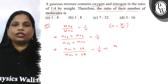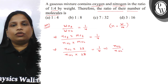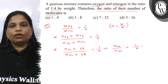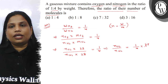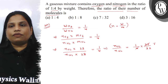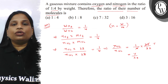Now the ratio of number of moles of oxygen to number of moles of nitrogen will be 1 by 4 multiplied by 28 divided by 32, which gives 7 divided by 32. So the ratio is 7 by 32.